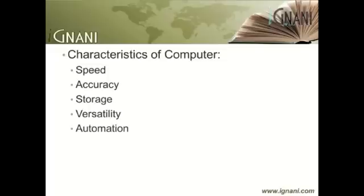Automation: Gone are the days where we had to use some input device and enter the information into the computer. Computers today need very little human interference. They have grown to a level where computers can interact between themselves automatically. We have come to a stage where computers can see us, listen to us, and even react to our gestures.